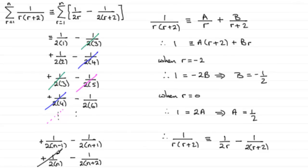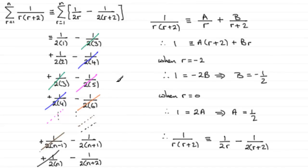What we notice is that certain terms cancel one another out. We have 1 over 2(3) here, and minus 1 over 2(3) above — those cancel. Similarly, this term cancels with one further down. Continuing this pattern, terms cancel out all the way through, and we are left with just four terms that do not cancel.